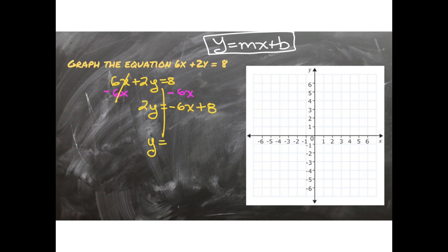And then I need to cancel the number 2. So I divide by 2, divide by 2, divide by 2. So my equation, negative 6 divided by 2 is negative 3x plus 8 divided by 2 is 4. So this will actually be the equation that I need to graph.